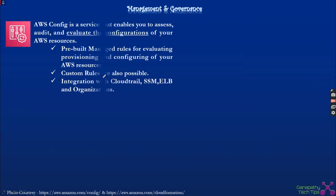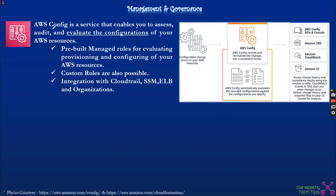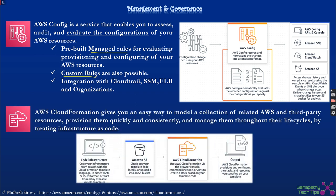Coming to other options, we need to know about AWS Config. AWS Config is the configuration service that helps notify us when a configuration change happens in your AWS ecosystem. For example, if you have an EC2 machine with a security group and you want to be notified of any security group change on that EC2, that can be done using AWS Config. Config comes with pre-built managed rules, and you can define custom rules as well. It can be integrated with CloudTrail, SSM, load balancer, and AWS Organizations.